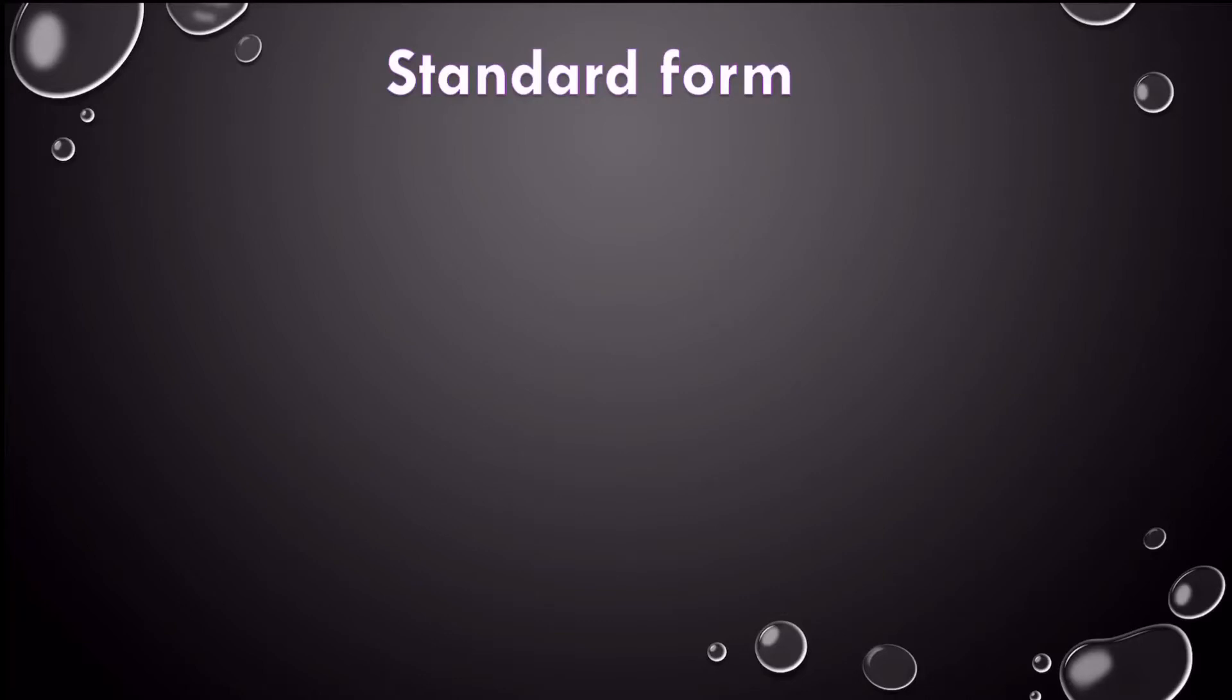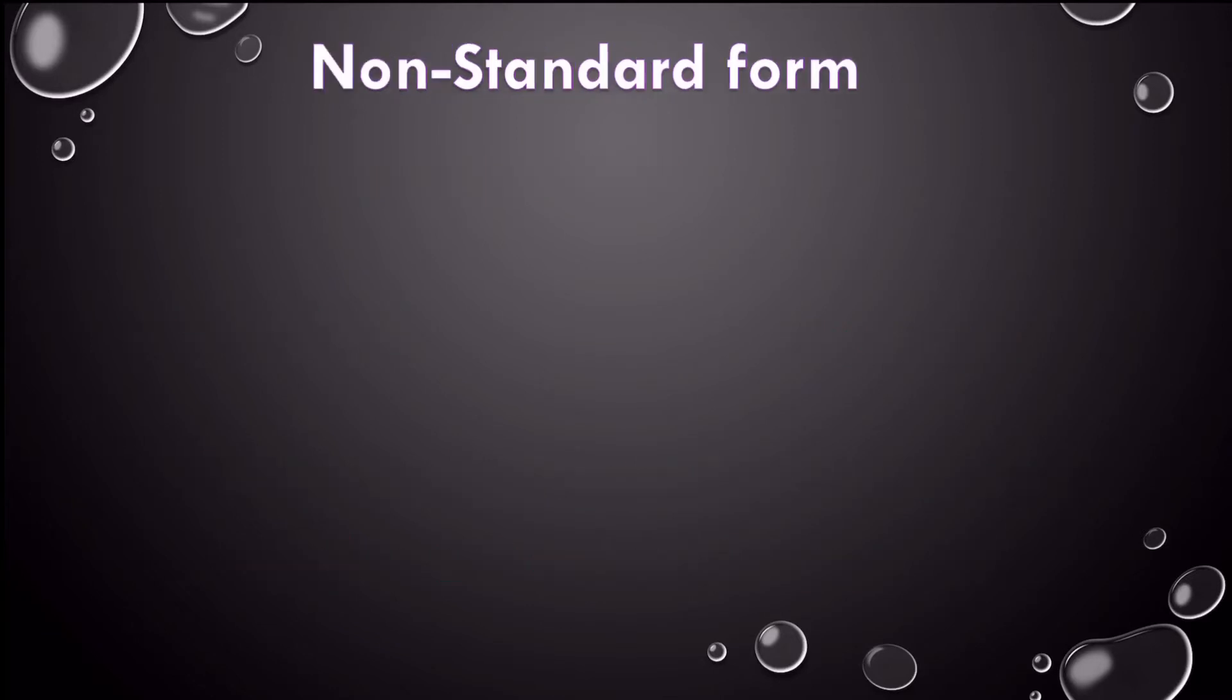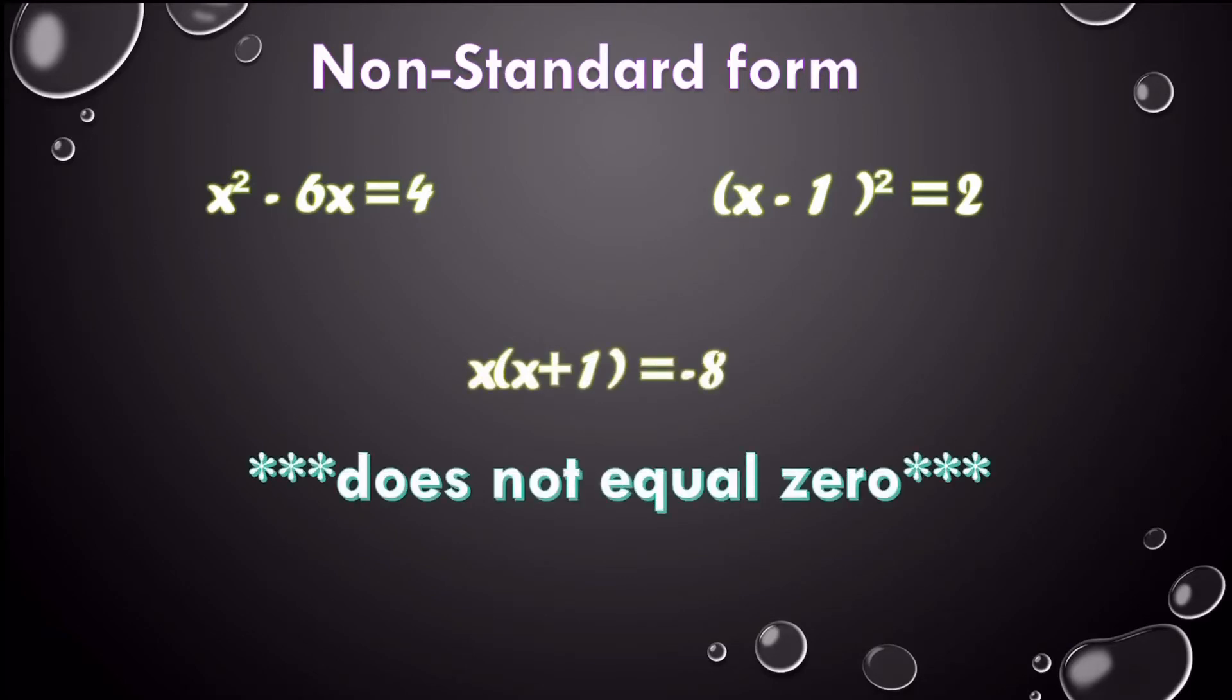So before we can start this, let's review standard form. This was from topic two of section one. Remember standard form is when we have it written in decreasing order of our exponents. We have our highest exponent all the way down to our constant. Non-standard form is not equal to zero, it's not written with exponents going in increasing order. So sometimes we're going to have to take these and get them to standard form.